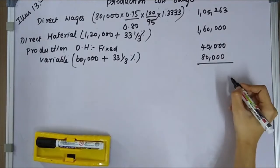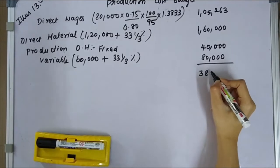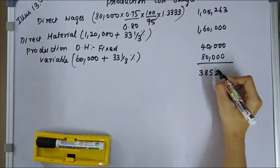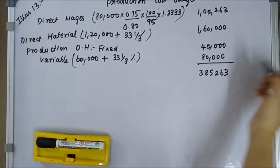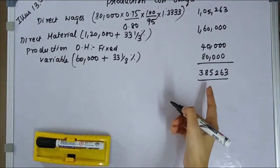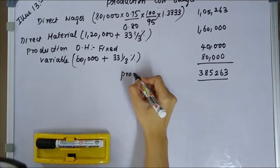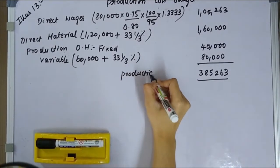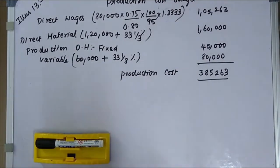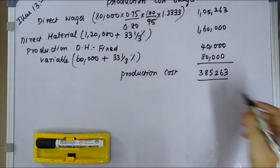So overall, adding all the figures together — 3,85,263. This amount is nothing but your production cost budget total.